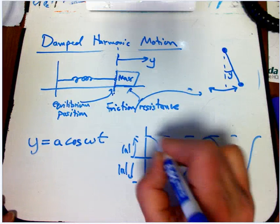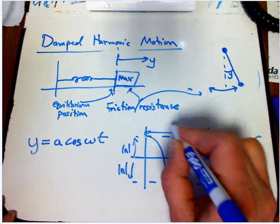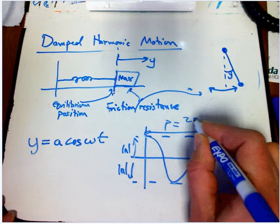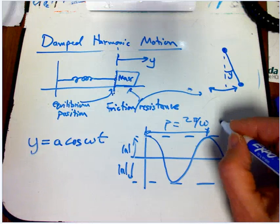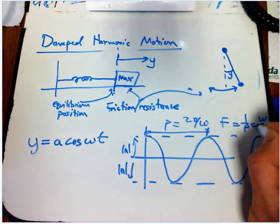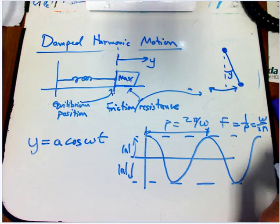We're going to answer questions like what's the period? Well, that's 2π over omega. What's the frequency? That's 1 over p or omega over 2π. Standard questions like that.